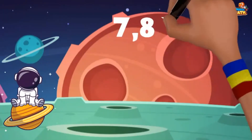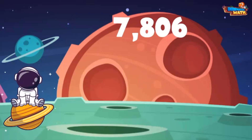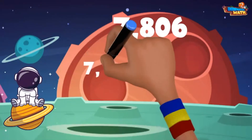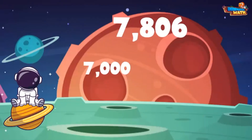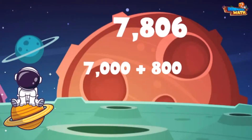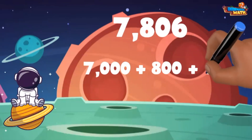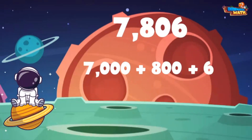Last one. Here we have 7806. We start with the highest place value, which is the thousands place — 7 represents 7000. Next we have an 8 in the hundreds place to represent 800. There is a 0 in the tens place, so we can skip over that one. Last, we have a 6 in the ones place, which is just the number 6. 7806 in expanded form is 7000 plus 800 plus 6.